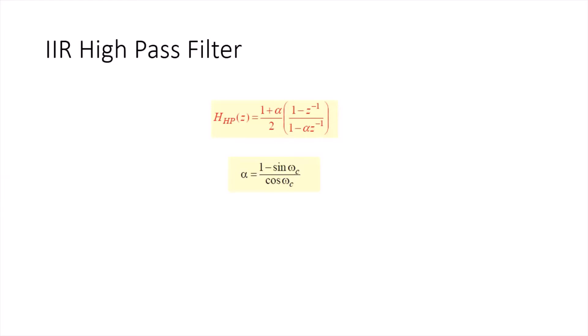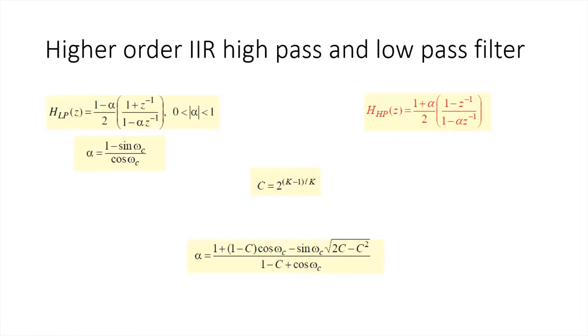Last time we designed a high pass IIR filter. The system function of the IIR high pass filter is given as: (1 + alpha) / 2 * (1 - z^-1) / (1 - alpha * z^-1). Alpha is calculated as 1 over sine(ωc) using the scores method. For a higher order filter, we cascade multiple sections, keeping alpha less than 1.